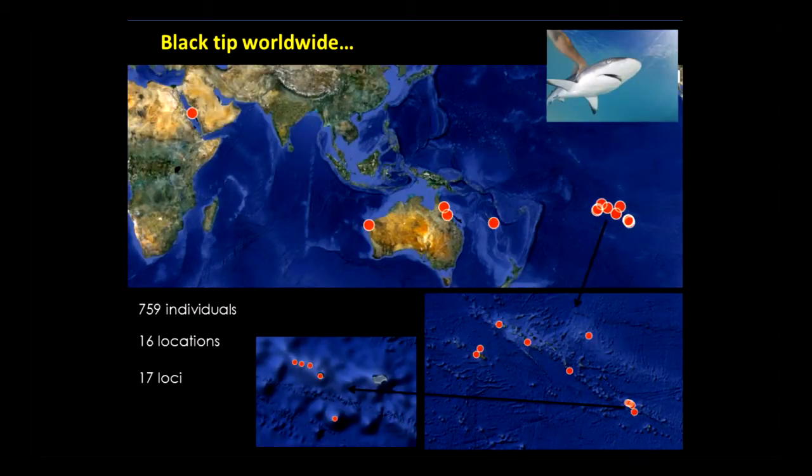One of the first studies I'm going to talk about is connectivity at the large scale. When you're doing population genetics — and this struck people in the 80s, 90s, and even more recently — you often lack genetic structure. You're lacking it in the ocean because the ocean transports everything everywhere. People were thinking connectivity was very large, because population genetics was showing homogeneity.